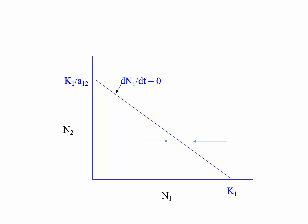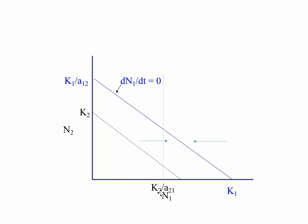We can define a different zero net growth isocline — that would be the impact of species one on species two. There is some carrying capacity for species two, and we can fill that environment with simply species two, or we can fill that environment with just species one. That's the incremental rate at which individuals of species one fill the carrying capacity of species two, or the carrying capacity of species two over that interaction term.